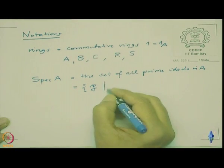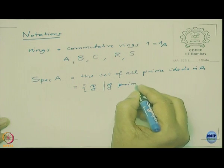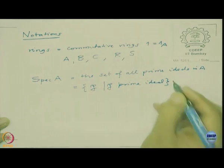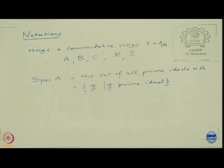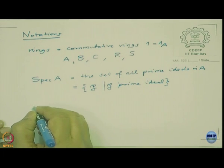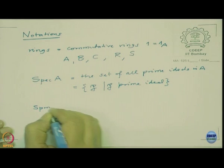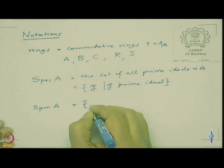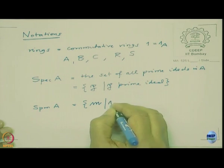Initially you might find the German letter notation difficult or irritating, but that I can't help — all the books I am going to follow use this convention, including Jacobson's lectures on abstract algebra in three volumes. So P is the prime ideal. The set of all prime ideals is Spec A, and this contains the maximal ideals, denoted SPM — the set of all maximal ideals.